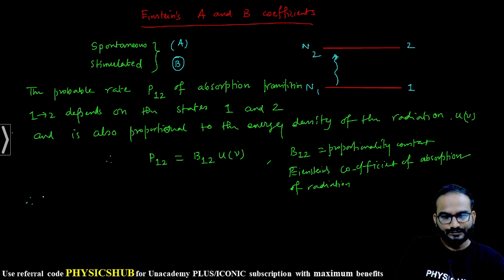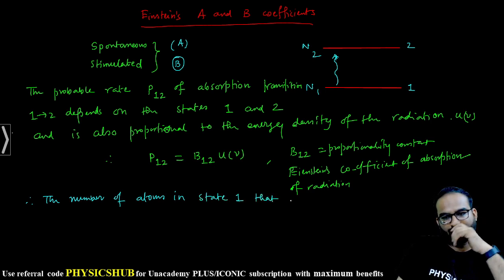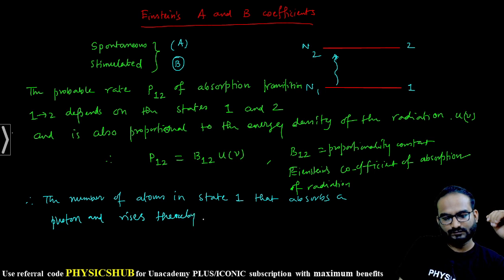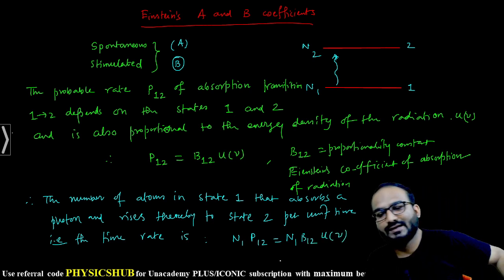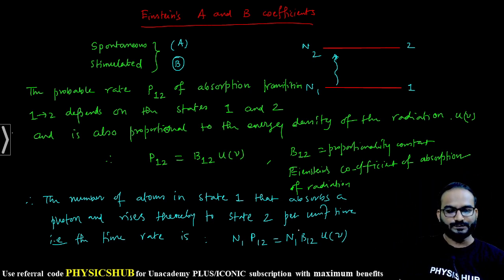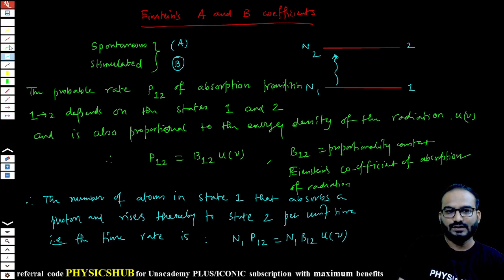N1 number of particles in state 1 is there. Therefore, the number of atoms in state 1 that absorbs a photon and rises thereby to state 2, the number of atoms per unit time—that is, the time rate—is N1 P12, which is N1 B12 u(ν). So this is the time rate of absorption of photons from state 1 to state 2.